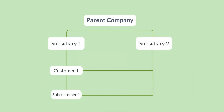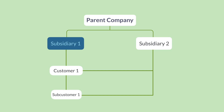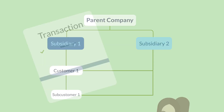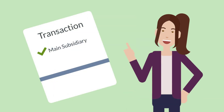At its core, the NetSuite Multi-Subsidiary Customer feature allows you to associate multiple subsidiaries with your customers and subcustomers. For each customer or subcustomer, one subsidiary would be listed as the primary subsidiary while other subsidiaries would be available for selection on the line level. Transactions involving any of these customers will connect to the customer's main subsidiary by default, but you would have the option of choosing any secondary subsidiaries on each transaction.